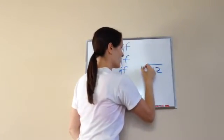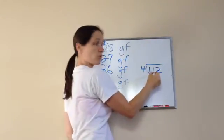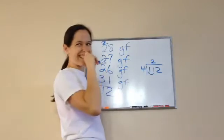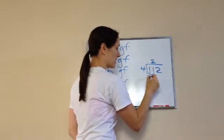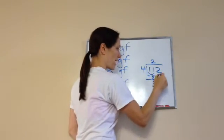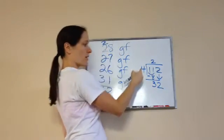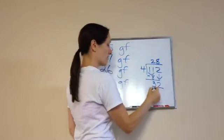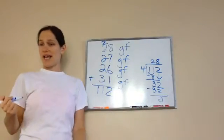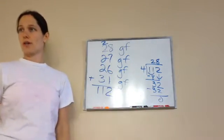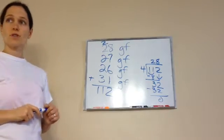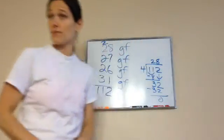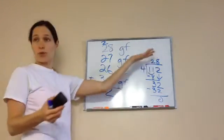So, 112 divided by 4. Let's do normal division. 4 goes into 11 two times — 4 times 2 is 8. Subtract, bring down. 4 goes into 32 eight times. And we get even amounts. So what does that tell me? How much goes in each aquarium? 28. And that would be a good even amount to put in each one.